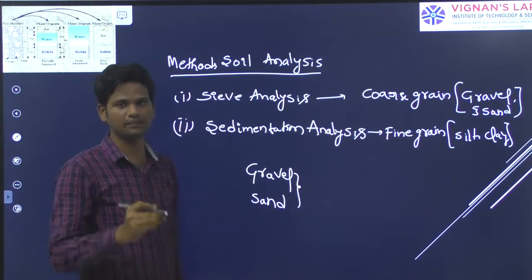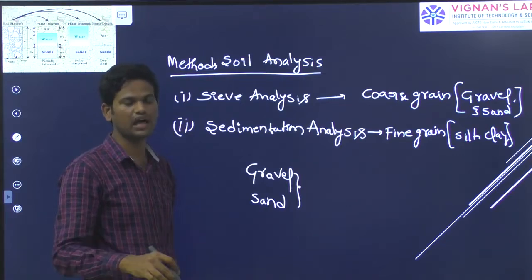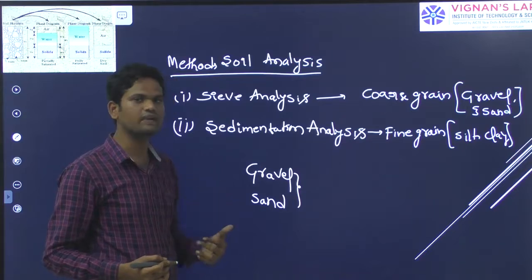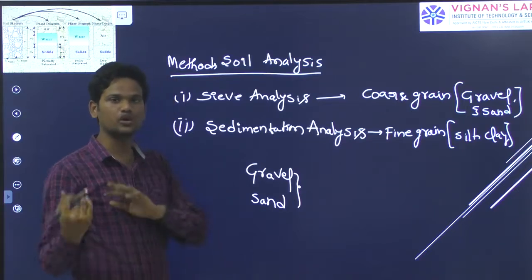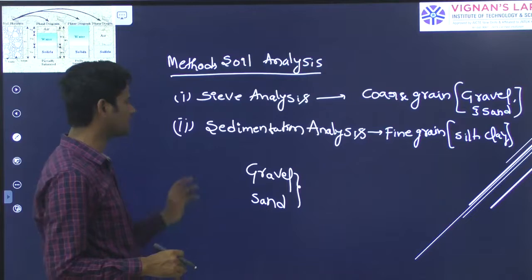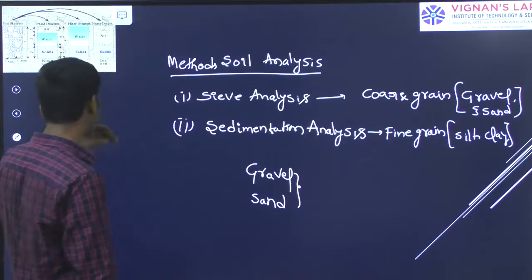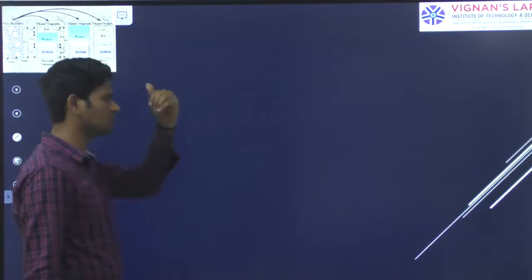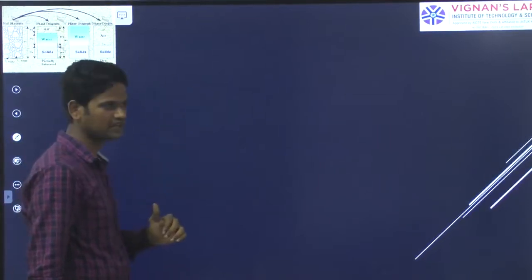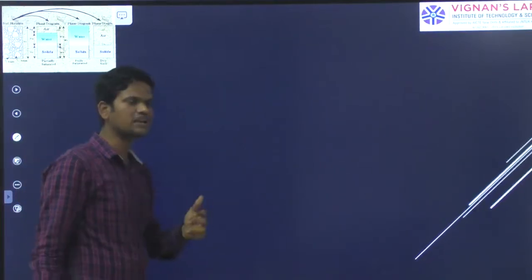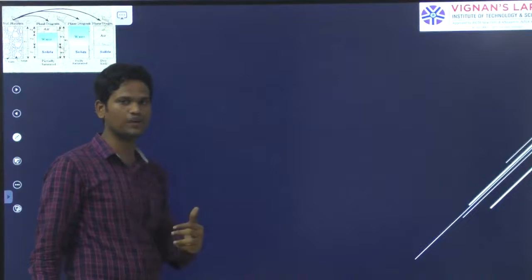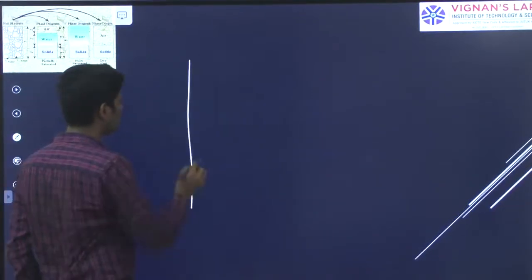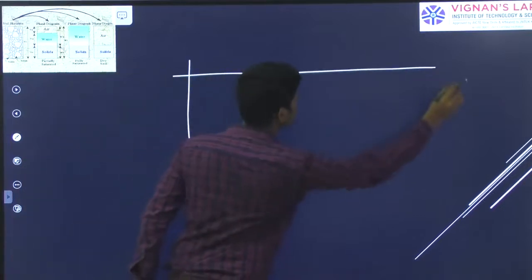Based on particle size distribution, we can determine whether the type of material — gravel and sand — falls under the category of well-graded material, poorly graded material, or uniformly graded material. Based on the type of grading, we can say whether the material is suitable for construction or not, which we determine using the particle size distribution curve.